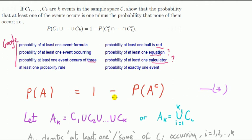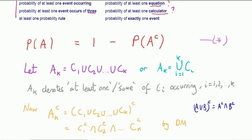To make the notation more compact, let's call that A subscript k. In compact form it means the same as this. Then just to reiterate, A subscript k denotes at least one, or some, of the Ci's occurring—some of the event Ci occurs.